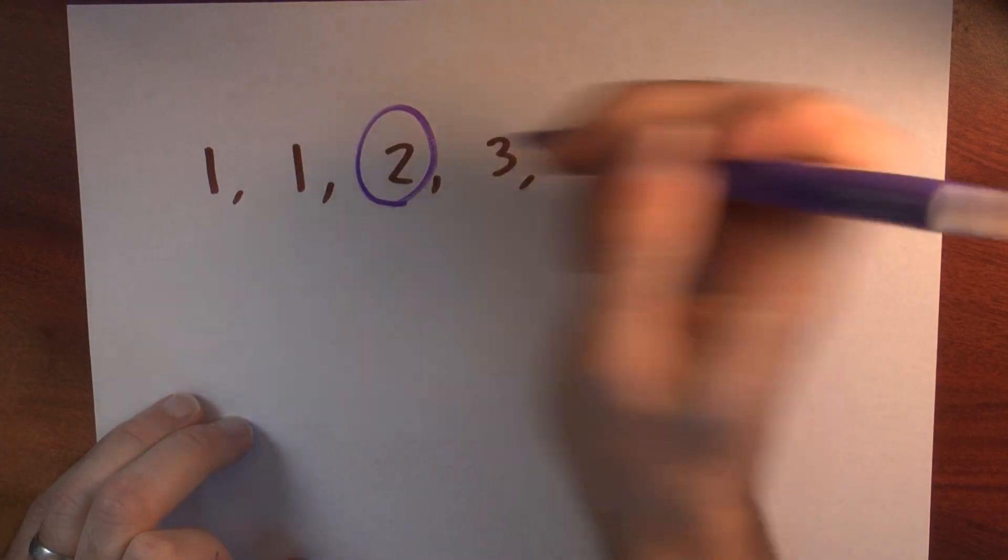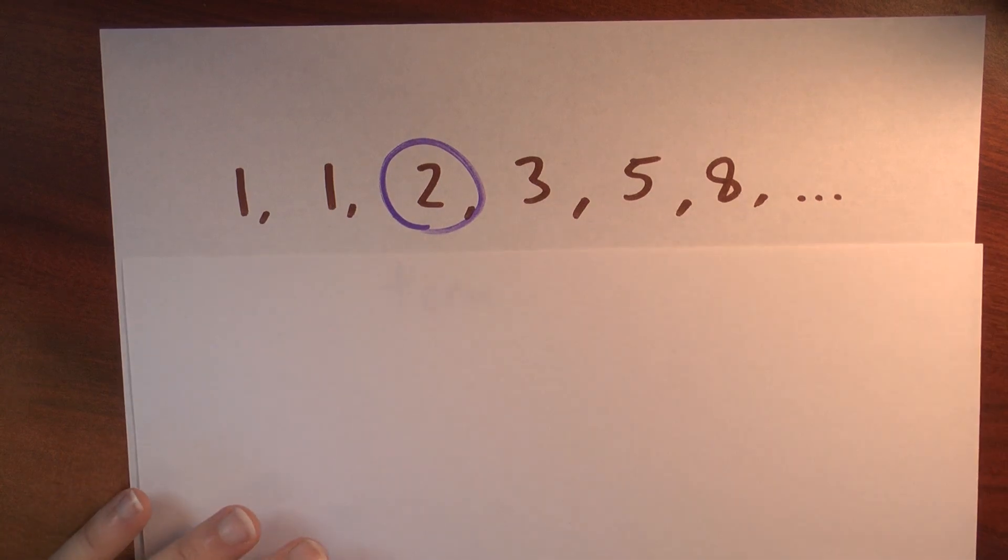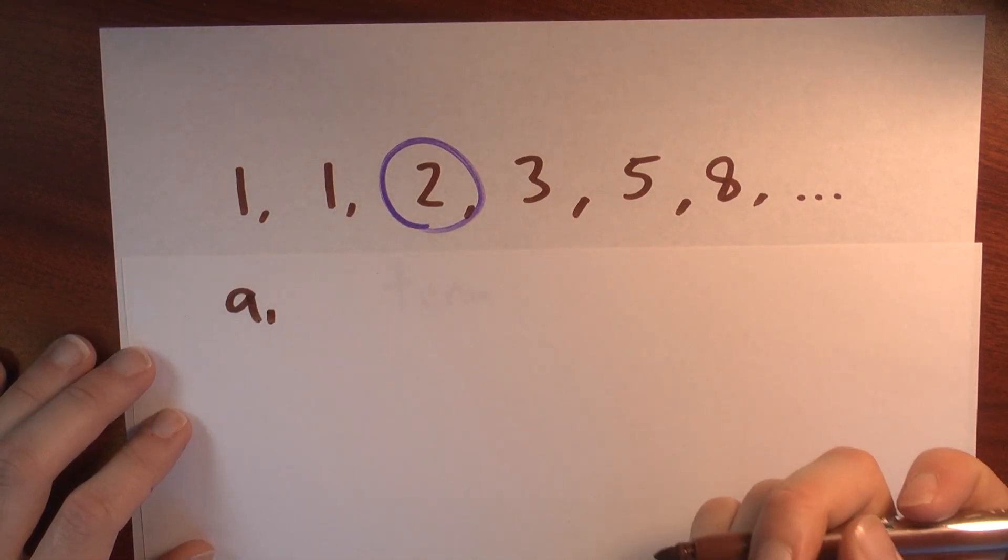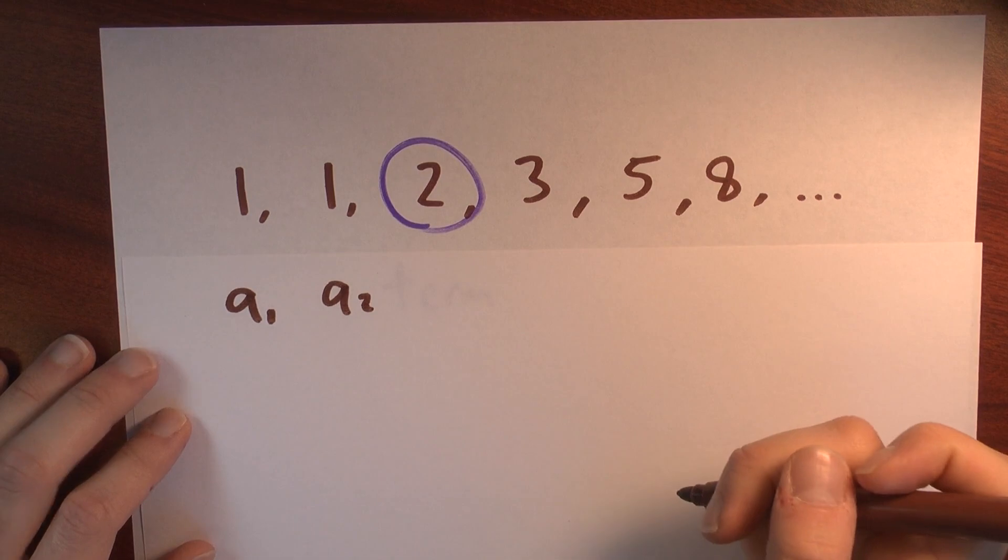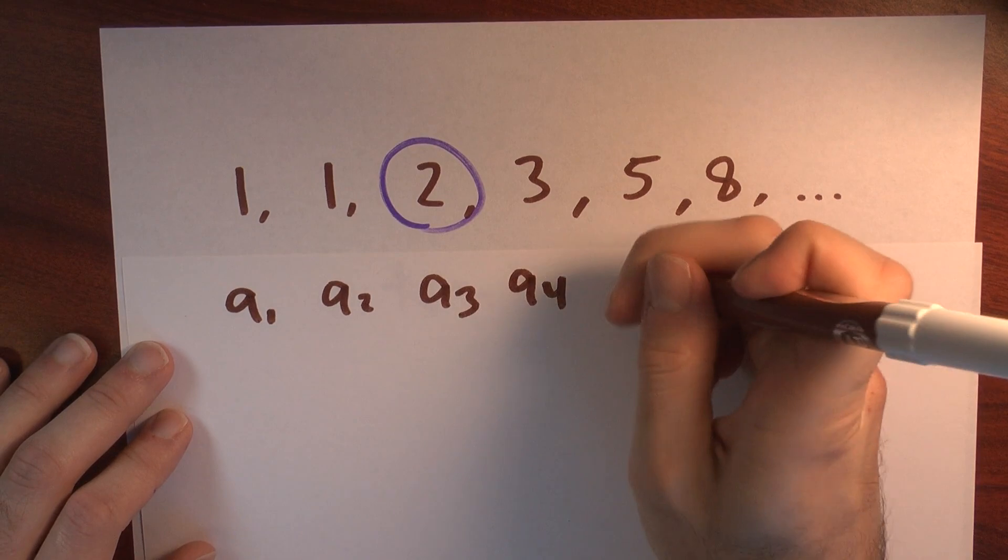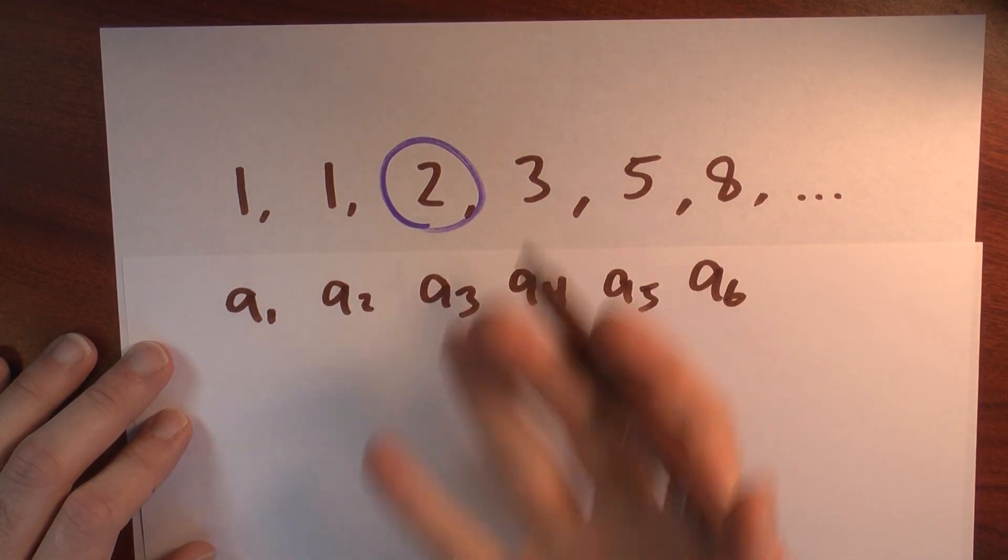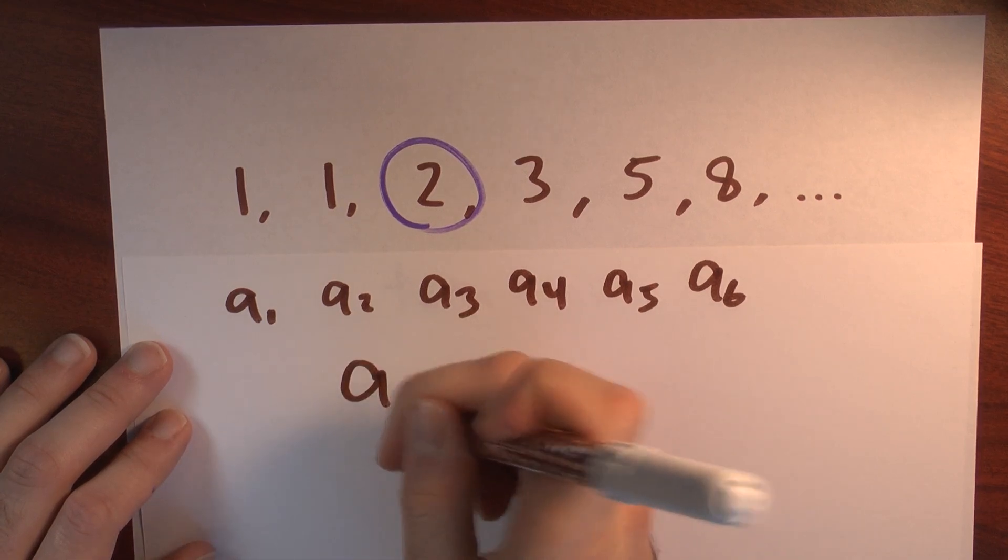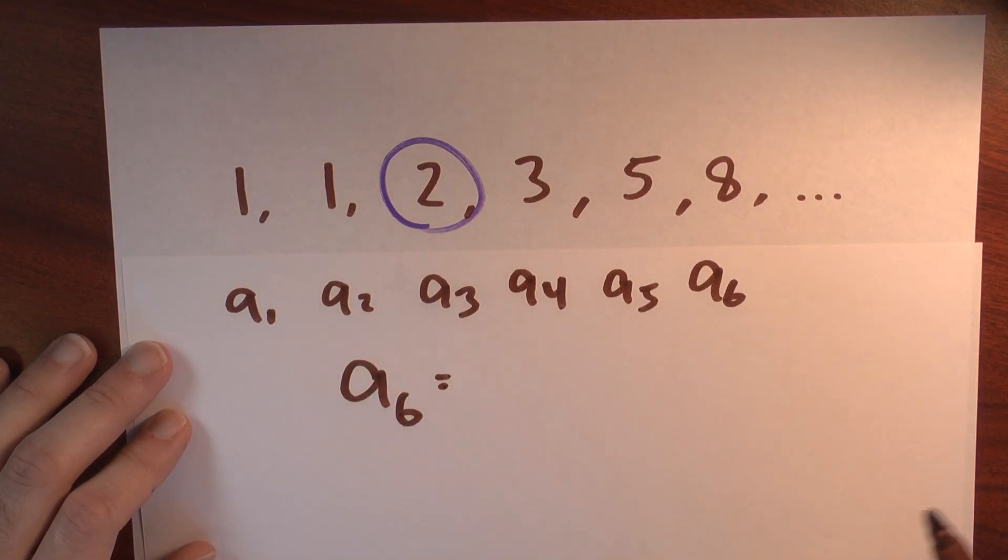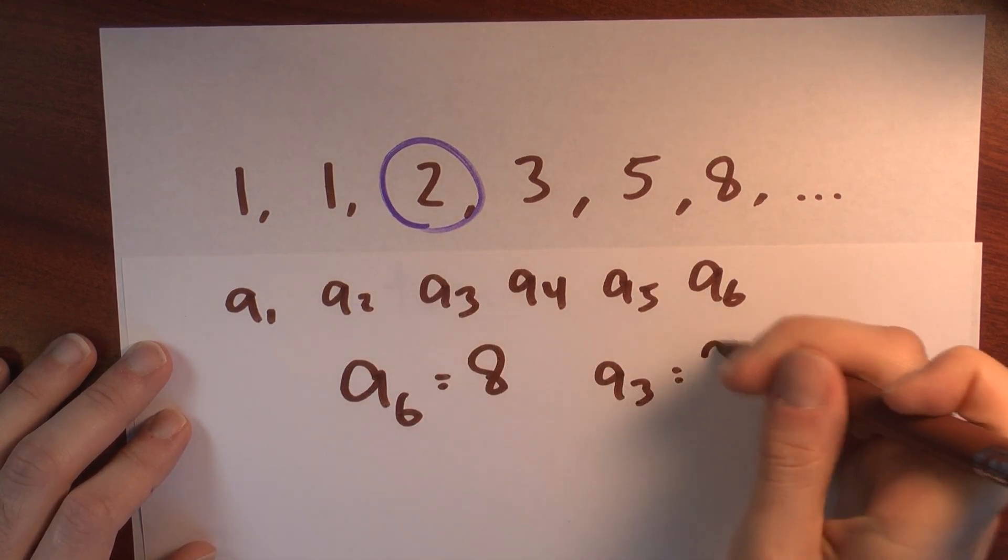Each of these numbers in the list is referred to as a term in the sequence. I want some notation so I can refer to specific numbers in the list. I'll write a sub 1 for the first term in my sequence, a sub 2 for the next term, a sub 3 for the next term, a sub 4 for the next term, a sub 5 for the next term, a sub 6 for the next term, and so on. So in this particular example, I could say that the 6th term in my sequence is 8, or the 3rd term in my sequence is 2.